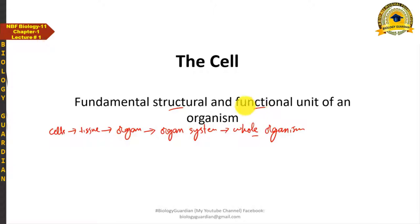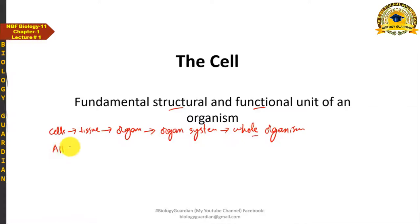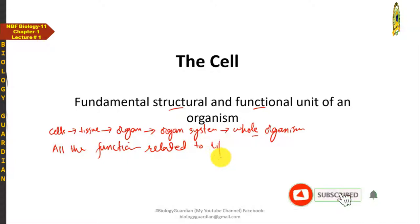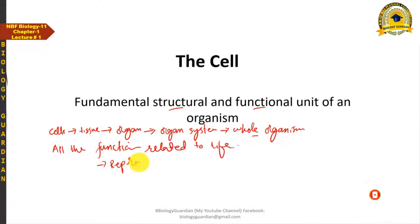This is why cell is also called the functional unit of an organism. Why is it called the functional unit? Because every function related to life — all life functions — are performed by a single cell. For example, the reproduction of an organism can be carried out by a single cell. Growth and metabolic activities are also performed at the cellular level.